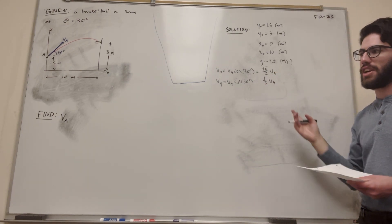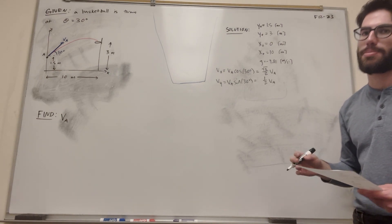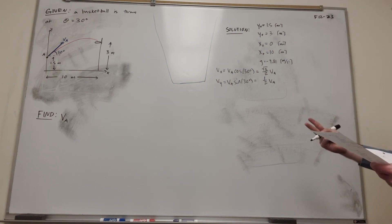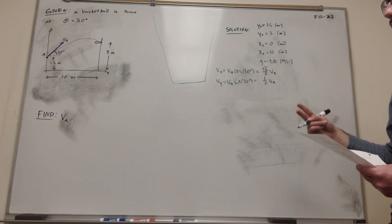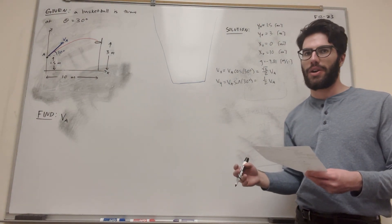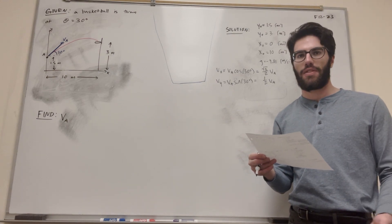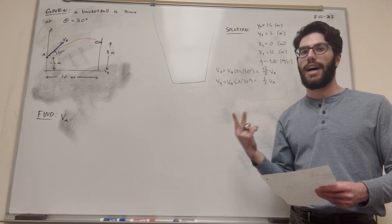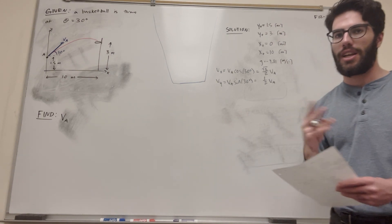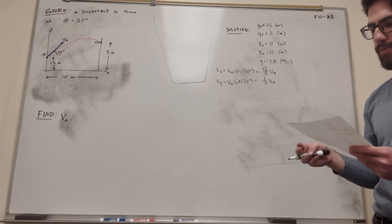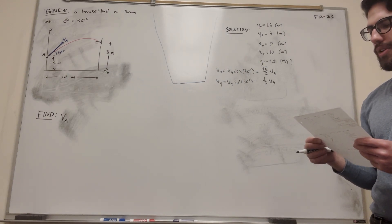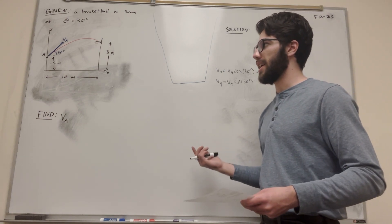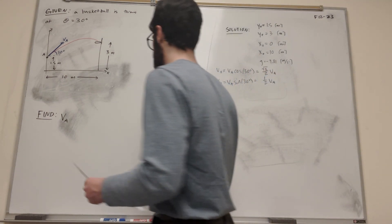Now we have all of these things. We need to solve using the kinematics equations. There are going to be two approaches — we need to find the x and y components of velocity to solve for velocity a, because we're going to have two unknowns: time and velocity. So we'll need two equations to solve for both of them. Let's start with the horizontal equation.